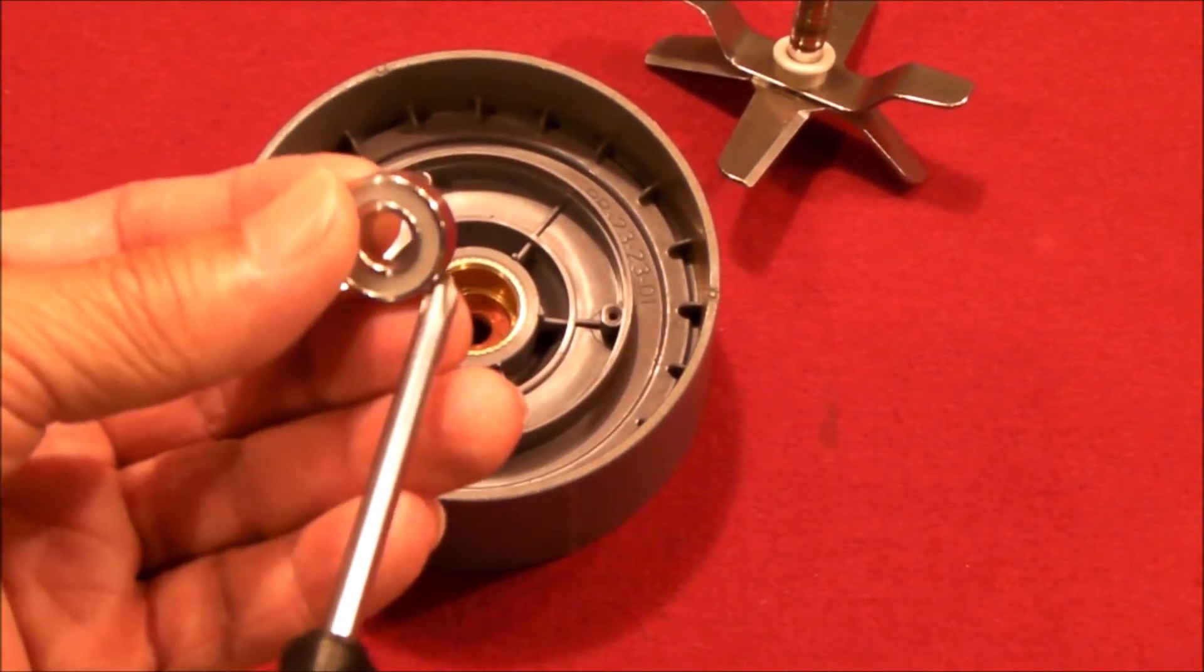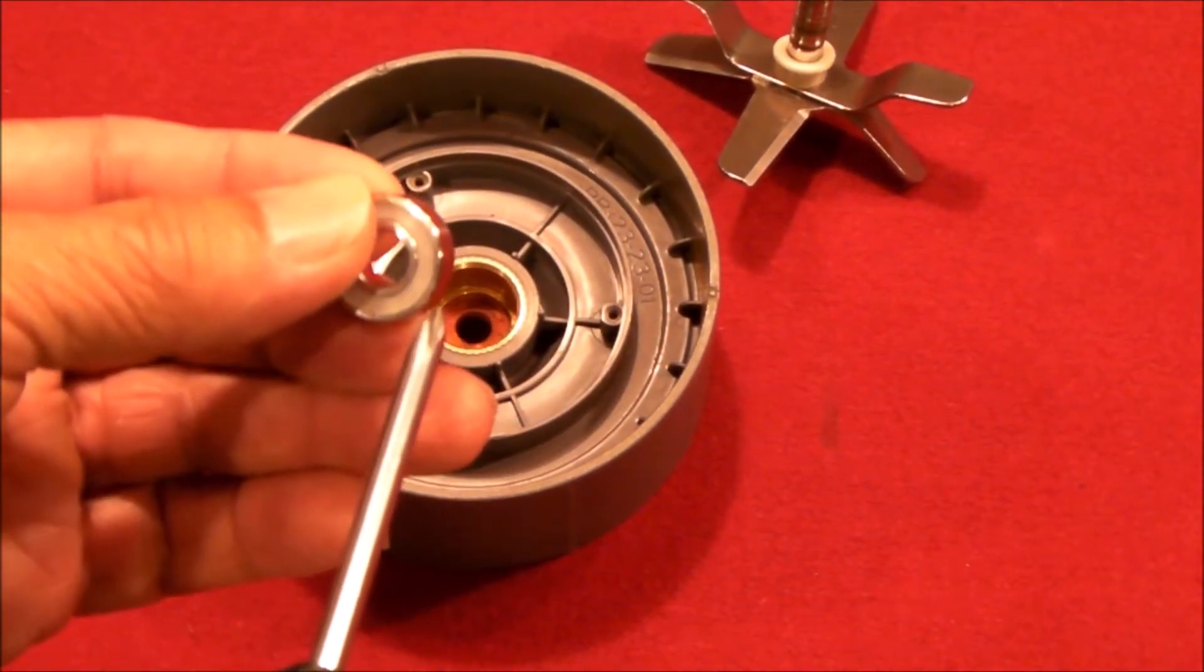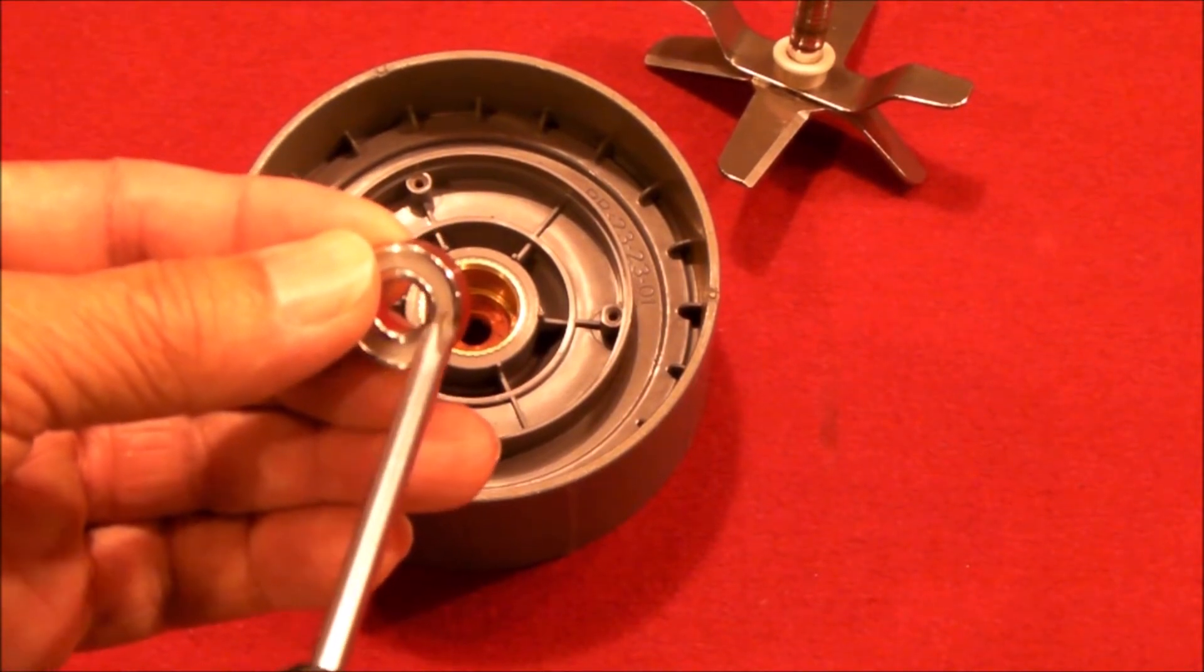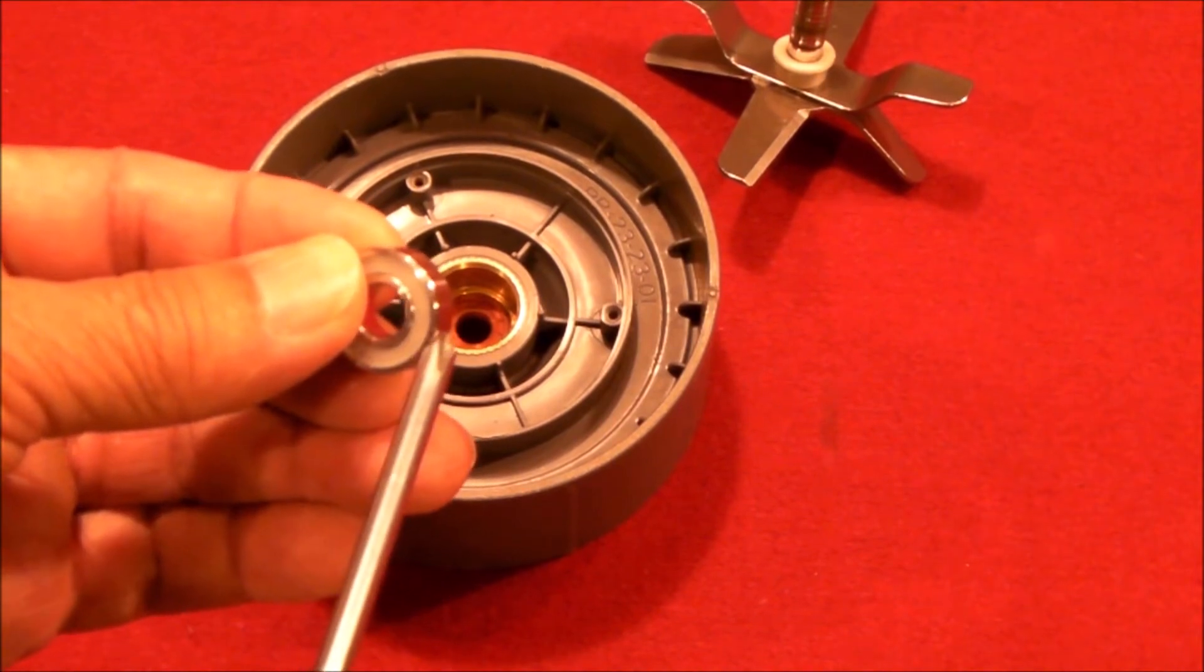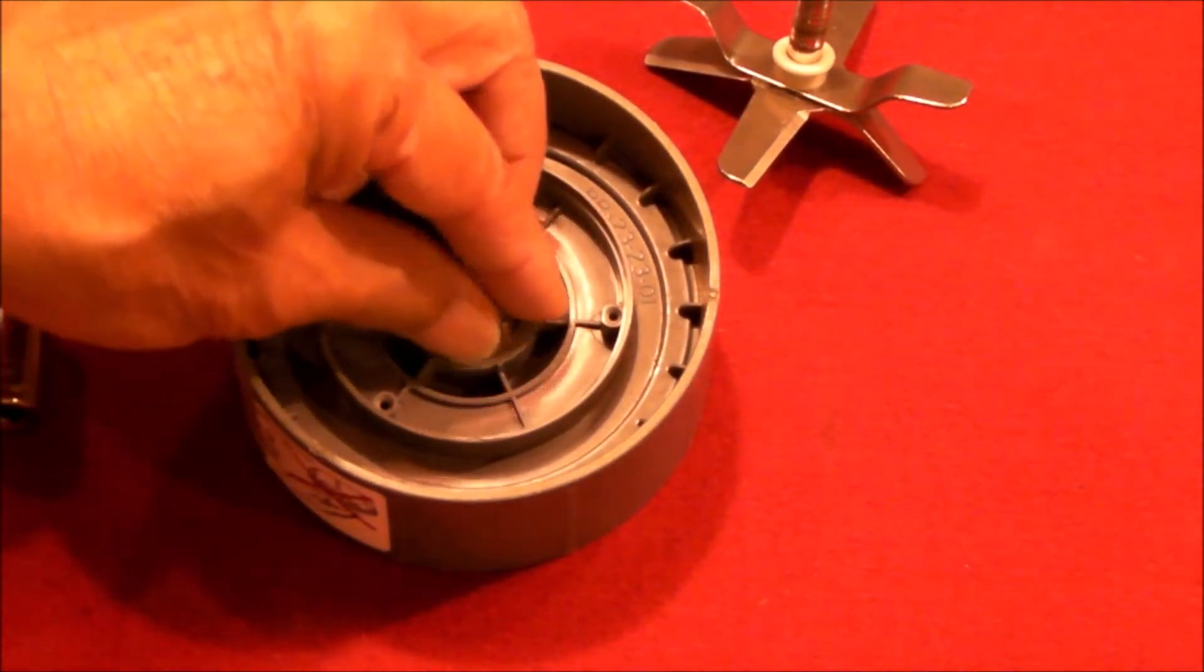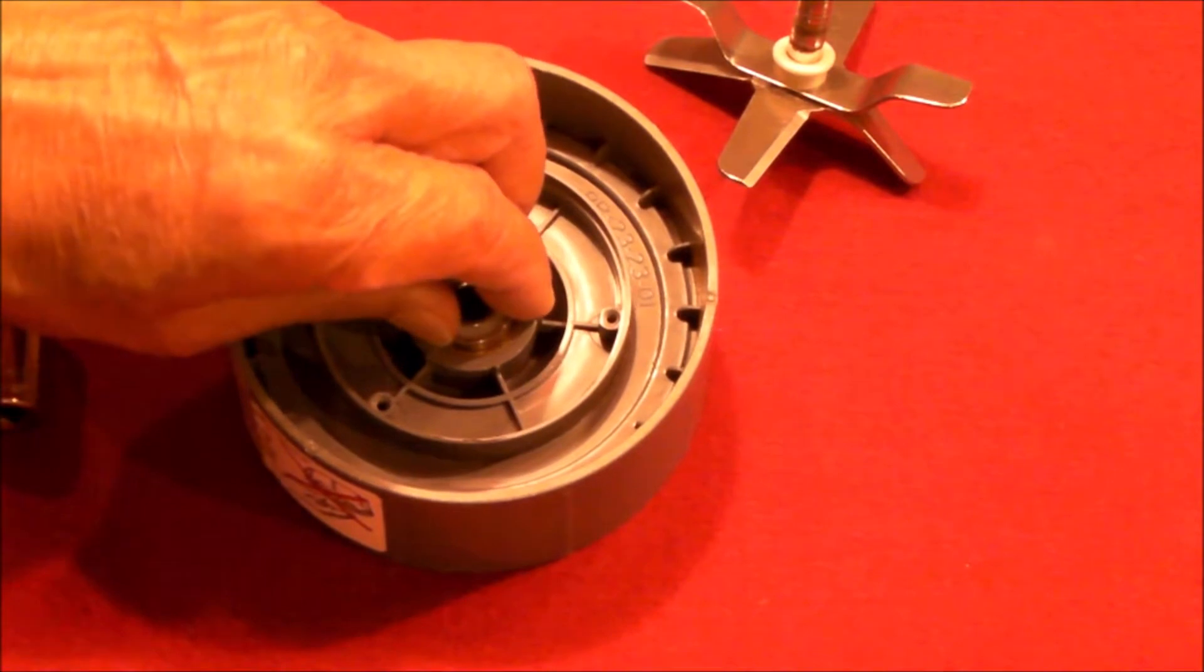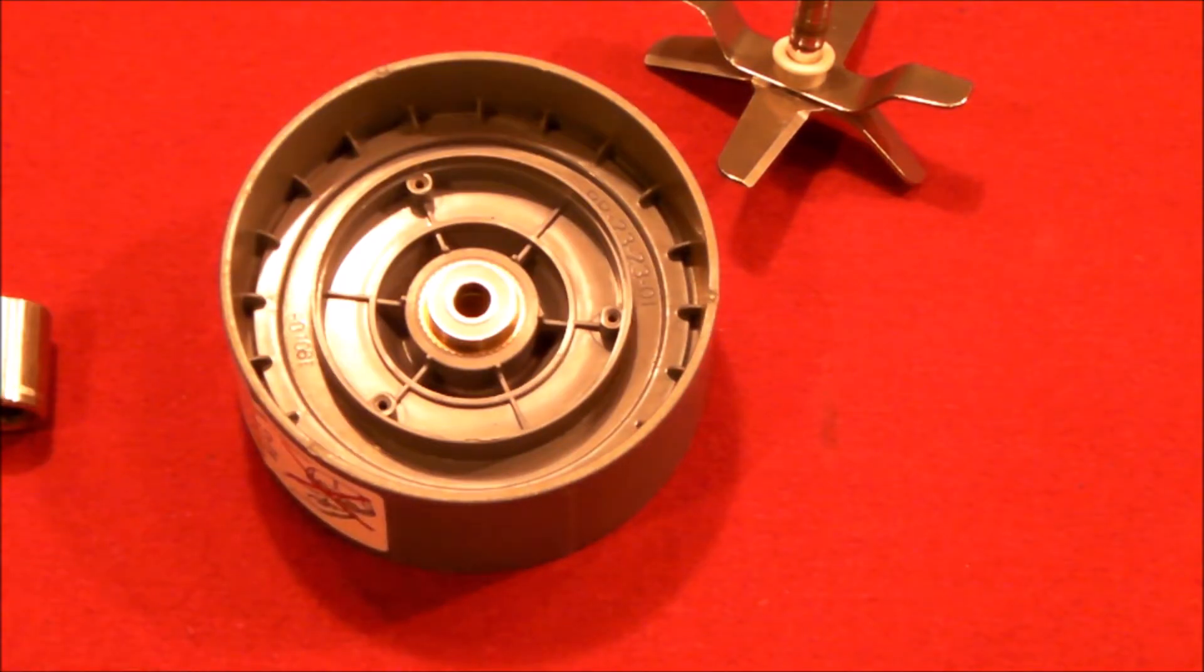When you press the new bearings in, you only want to press on the outer race. You do not want to press on the inner race or the seal. You want to press strictly on this outer race. So I like to start the bearing manually by just putting it into place. Then you want to take either a 14 or 15 millimeter socket or even a 9/16 socket.